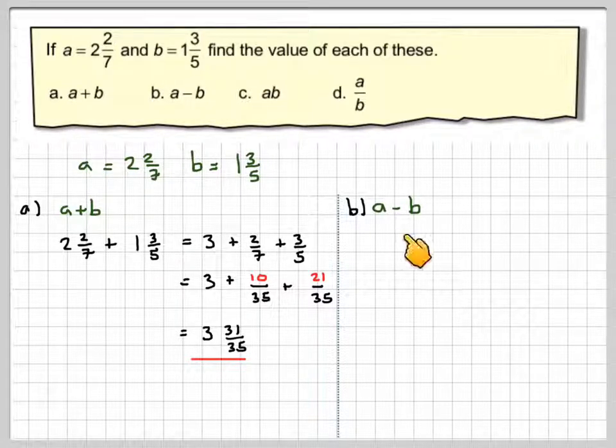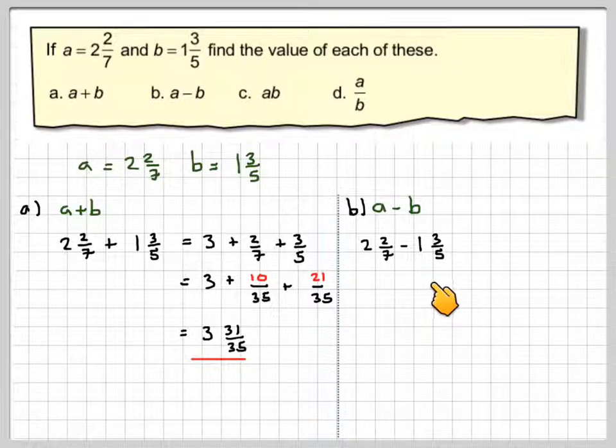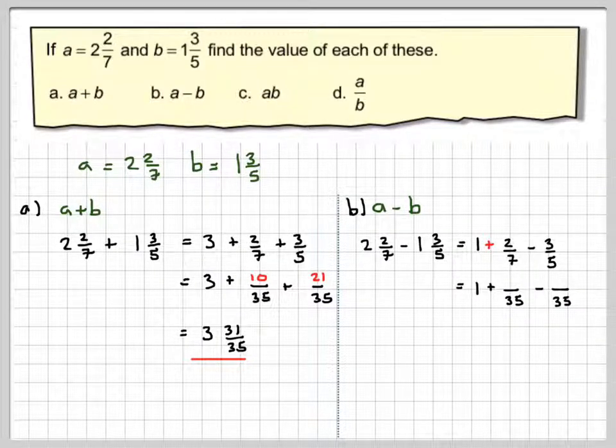Part B, A minus B is slightly more difficult, so it's 2 and 2 sevenths minus 1 and 3 fifths. 2 take away 1 gives me 1 plus 2 sevenths minus 3 fifths. Again, we put them over a common denominator, 35. And because I've multiplied the 7 by 5, then the 2 becomes 10. And the same here, I've multiplied the 5 by 7, so the 3 will become 21.